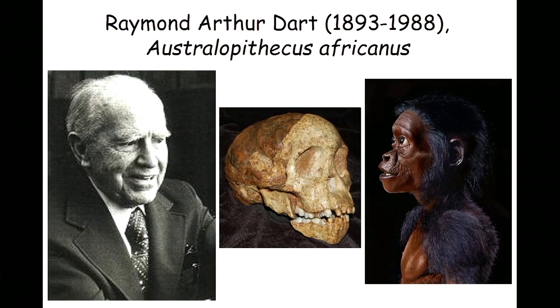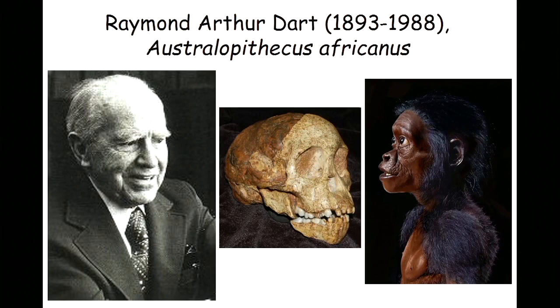So he sat down and, in record time, wrote an article — a letter, as it's called — for Nature. He put it on the mail boat; that's how you did it then, and waited for his discovery to be published. He knew that because he had something never before seen, he got to name it something new. So he called it Australopithecus africanus — meaning southern ape from Africa — and he said this was walking and is ancestral to the genus Homo.